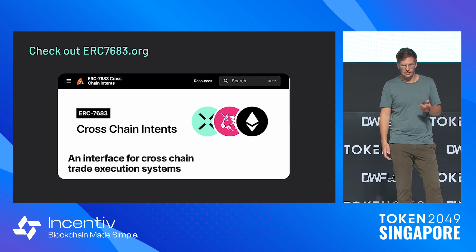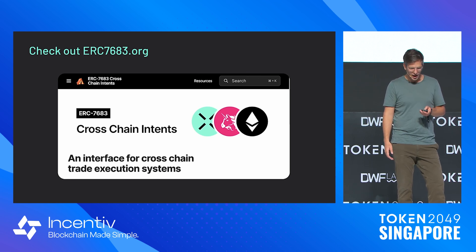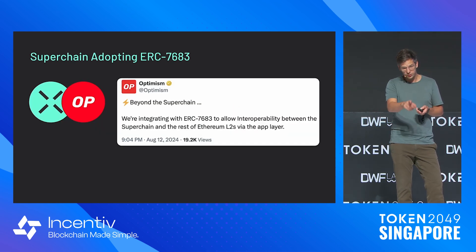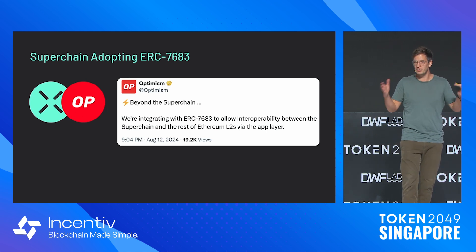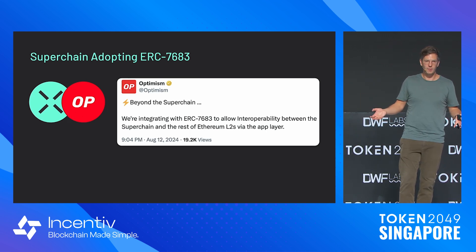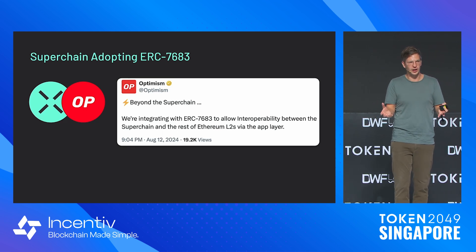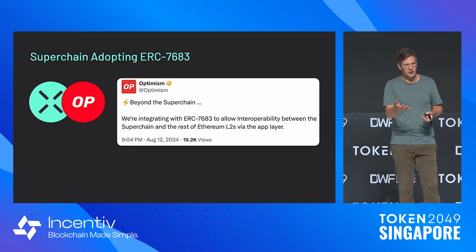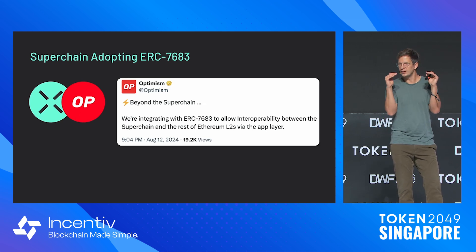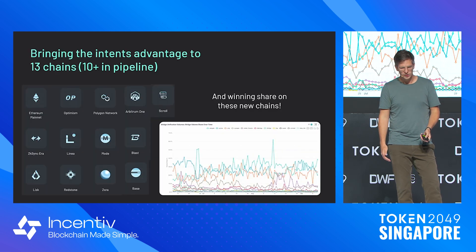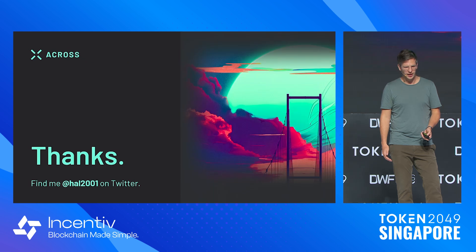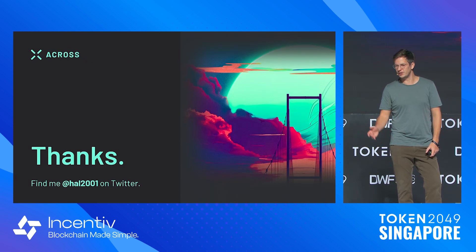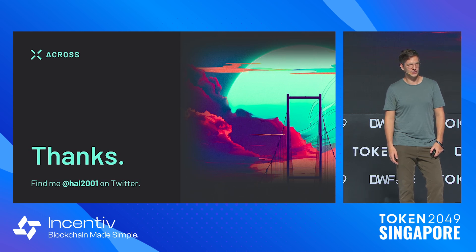I encourage you to go check out ERC7683.org. We've also been working on this with Optimism — they're doing a lot to make superchain interoperability happen, but they also care about interoperability outside the superchain. The Optimism team is using the ERC-7683 cross-chain intents standard as the basis for seamless, super-fast interoperability within the superchain itself. I'm howl2001 on Twitter, I love talking about intents, and I appreciate you all taking the time.